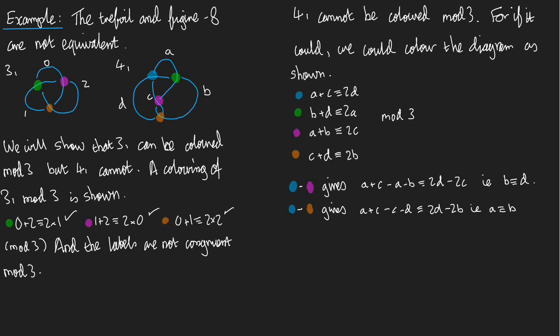Let's do one more. Let's do green minus orange. Green minus orange gives, can you see where this is going by the way, green minus orange gives B plus D minus C minus D congruent to 2A minus 2B.